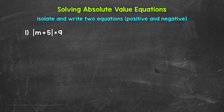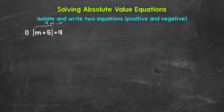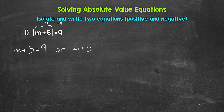We will go through two examples. Let's take a look at number one where we have the absolute value of m plus 5 equals 9. Now our absolute value is isolated here, so we can move on to writing two equations. This absolute value equals 9, so we know that m plus 5 needs to equal positive 9 or negative 9. The absolute value of 9 or negative 9 equals 9, so we need two equations: m plus 5 equals 9, or m plus 5 equals negative 9. Now we solve.